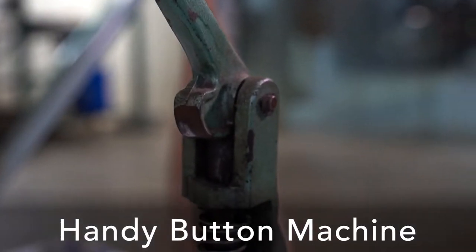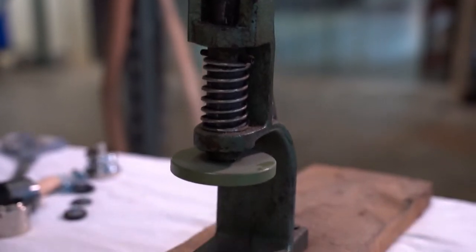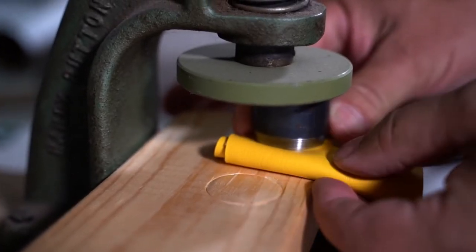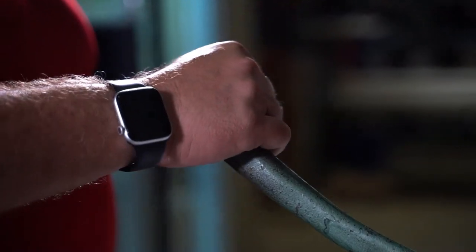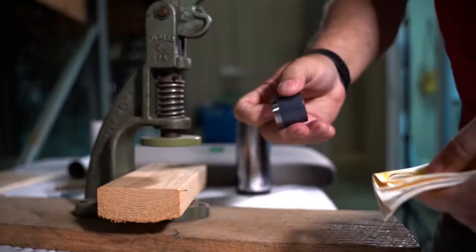To cut material with a Handy Button Machine, simply place the plastic cutting disc on the bottom of the machine, then place the material on the top of the block. Pull the handle down and apply moderate pressure to cut the material.